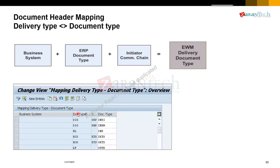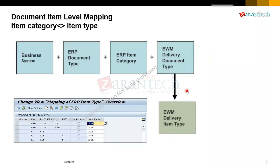The ERP document type maps to the EWM document type. There is a code initiator — it automatically comes through qRFC based on the business transaction you are doing. For example, if it's repetitive manufacturing production receiving, it will take IMBM; if it's an EGR-based thing it will take IMBI. It's a one-to-many relationship. Same as the reference movement type — WM movement types are connected to IM movement types via the reference movement type for the same one-to-many reason. We also have to map item categories — item category and item type are the same.